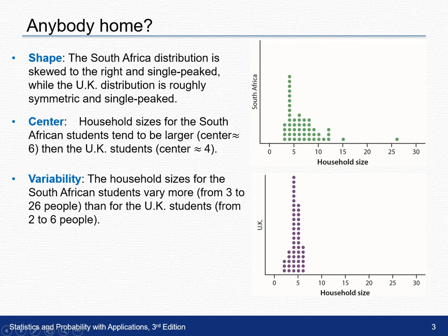Variability — here we want to look at how spread out the data is. The household sizes for South Africa students vary more, from a minimum of three to a maximum of about 26, whereas in the UK they're more consistent, with a minimum of two to a maximum of about six people in a household.